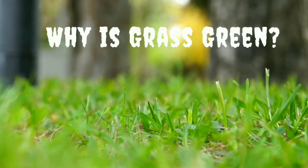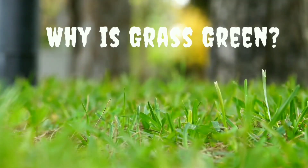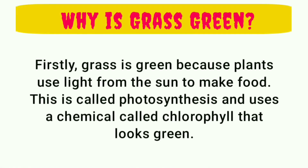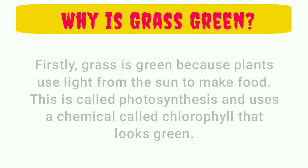Why is grass green? Firstly, grass is green because plants use light from the sun to make food. This is called photosynthesis, and uses a chemical called chlorophyll that looks green.